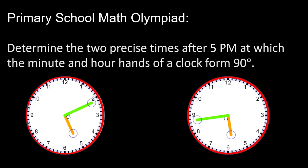Today, we are tasked with determining the two exact moments after 5 PM when the minute and hour hands of a clock form a 90-degree angle.